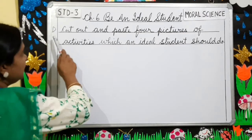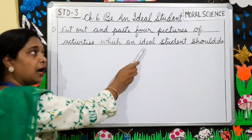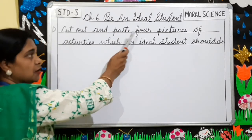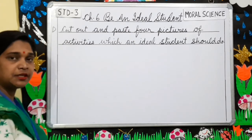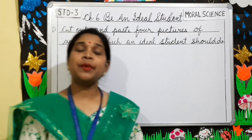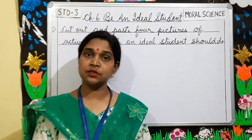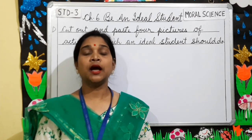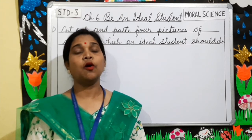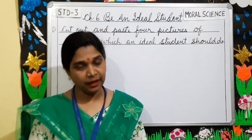Exercise D: Cut out and paste 4 pictures of activities which an ideal student should do. Parents, a worksheet related to this topic will be uploaded on the school website. Kindly visit the school website and help your ward to do it. Also, help your ward to do all the exercises given in the book. Thank you.